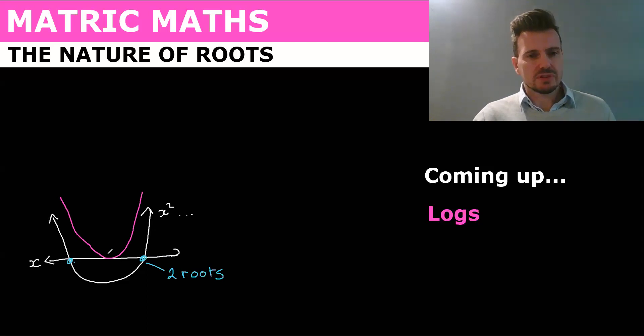So say we shifted the graph up to the x-axis where it just touches the x-axis, where y is equal to zero. Well what we've got is just one root.